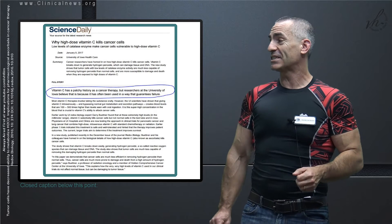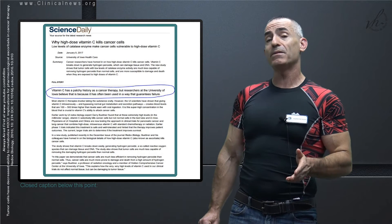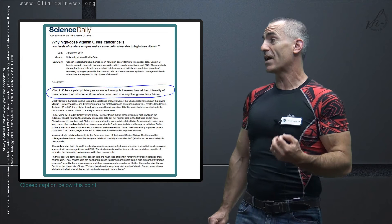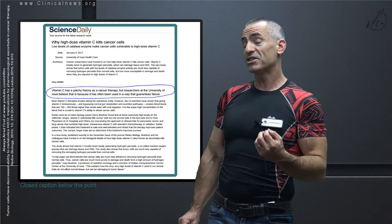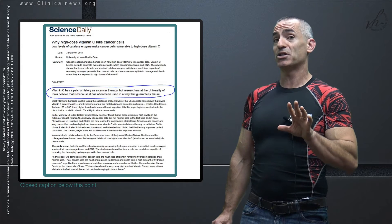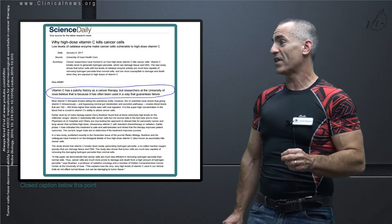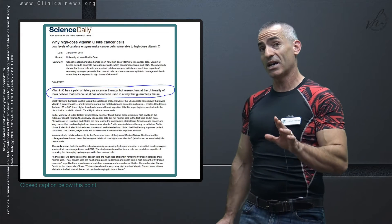By bypassing normal gut metabolism and excretion pathways, they're able to create blood levels of vitamin C which are 100 to 500 times higher than what's normally seen with oral ingestion. It is a super high concentration of blood that is crucial to vitamin C's ability to attack cancer cells.